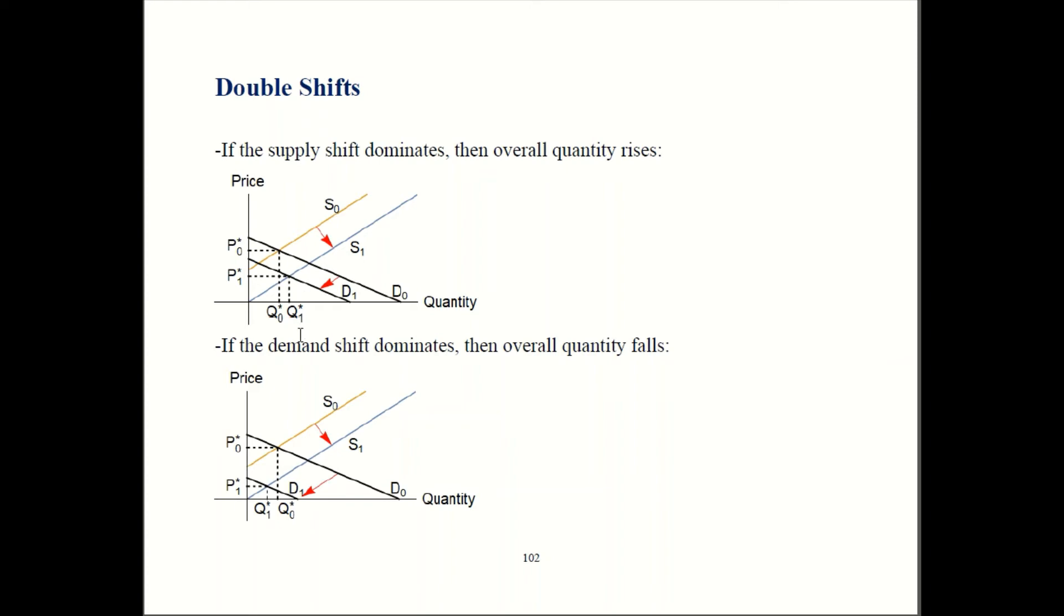Now, that's not the only possibility. Remember I said the effect on quantity was overall unclear. What if we had seen a really big demand shift that overwhelmed the supply shift? In that case, you get a graph like this one down here. In the beginning, we're on old demand and old supply.